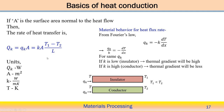If A is the surface area normal to the heat flow, we can further modify this. The rate of heat transfer is QK (flux) multiplied by cross-section area A, giving QK = k·A·(T1 minus T2)/L, which is the total rate of heat transfer through the wall.